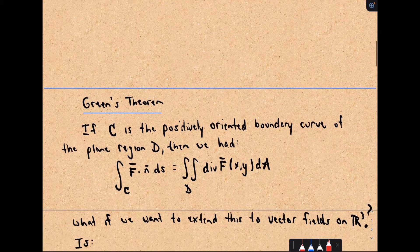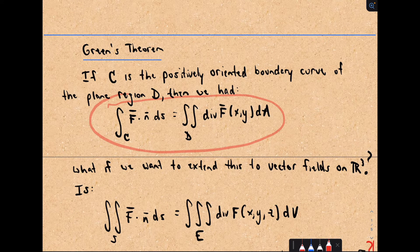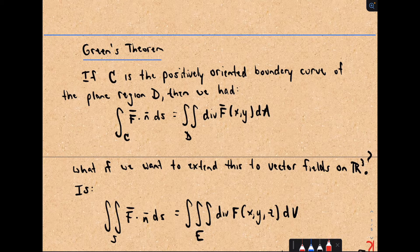Recall Green's theorem says: if C is a positively oriented boundary curve of the plane region D, then we have this relationship. You've got a double integral — integrating over the plane region D — and it says we can turn that into a single integral just involving the boundary curve C. This is like an analog to the fundamental theorem of calculus, because the divergence is basically like a derivative.